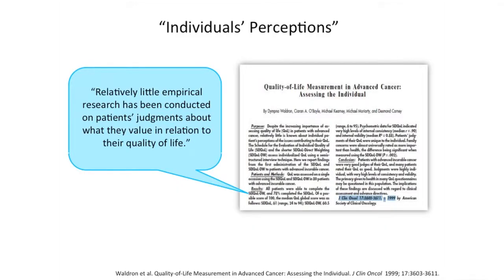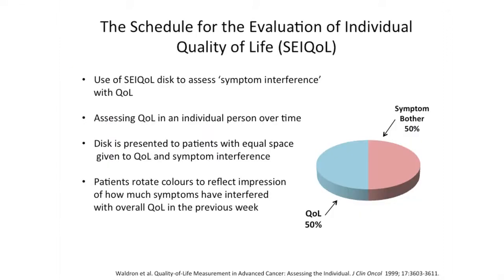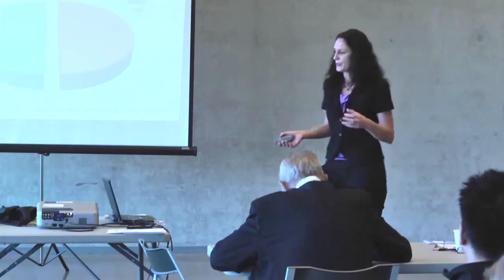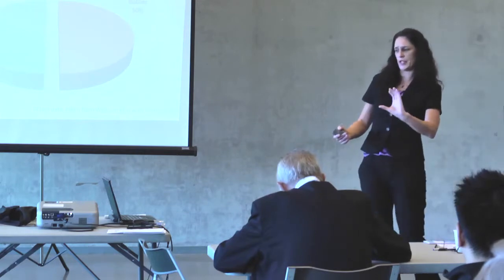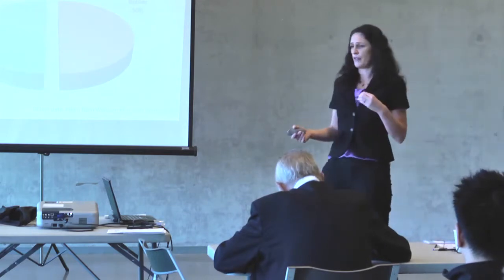I'm going to show you some data from Kieran O'Boyle's lab in Dublin. He developed a measure called the CEQOL, which is a way of assessing quality of life on an individual level within one single person, either at one point in time or over time. The way this works is that you give the patient or research participant a kind of pie, and you can move the parts of the pie around to make them bigger or smaller, giving an idea of how much a particular condition is impacting on quality of life. If the symptom bother part of the pie is bigger, it necessarily makes the quality of life part smaller.